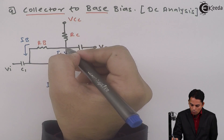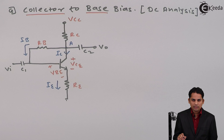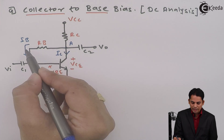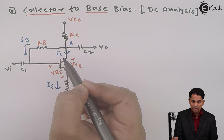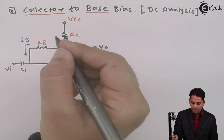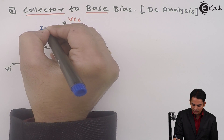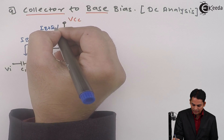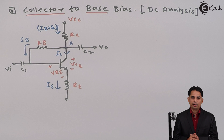At node A, the current is getting divided into base current IB and collector current IC. Hence the current flowing through RC can be written as IB plus IC. This is a very important point — the actual current flowing from the collector is IB plus IC.